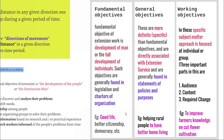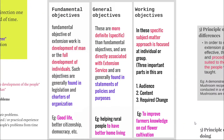Fundamental objectives of an extension include the development of the people, providing them with good life, better citizenship, and democracy. To achieve that, general objectives can be helping rural people to have better home living quality. Working objectives can be: to improve farmer's knowledge on cut flowers, vegetable cultivation, dairy production, and better soil nutrient management practices. This is all about objectives of an extension program.